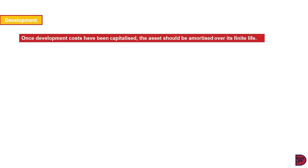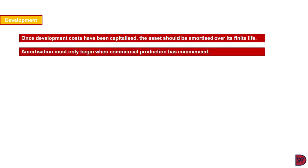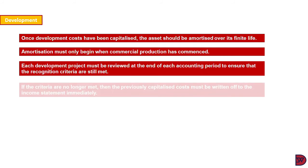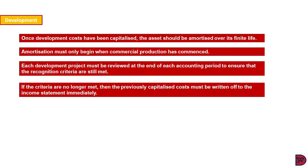Let's move on to talk about the treatment of development costs. Once the development costs have been capitalized, the asset should be amortized over its finite life. Amortization must only begin when the commercial production has commenced, matching the income and expenditure to the period in which it relates. Each development project must be reviewed at the end of each accounting period to ensure that the recognition criteria are still met. And lastly, if the criteria are no longer met, then the previously capitalized costs must be written off to the income statement immediately.